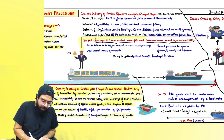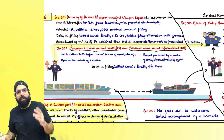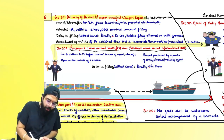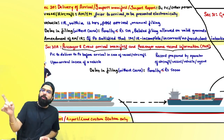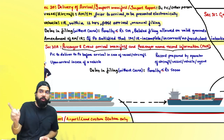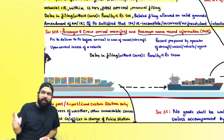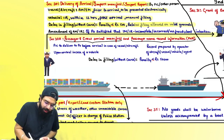Section 30 says the person in charge, his agent, or any other person should deliver an arrival manifest or import manifest in case of vessel or aircraft, and an import report in case of vehicle. For vessel or aircraft, the arrival manifest or import manifest should be delivered prior to arrival electronically. For vehicle, the import report should be filed within 12 hours post arrival; manual filing is also possible. Delay in filing without cause carries a penalty of up to ₹50,000.